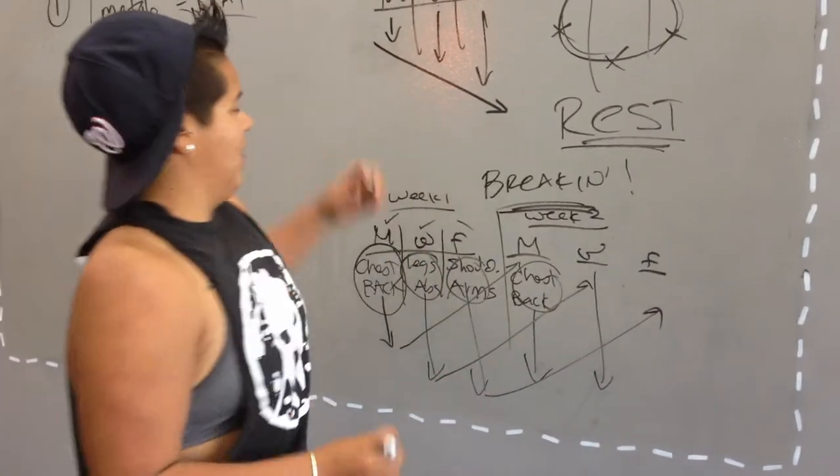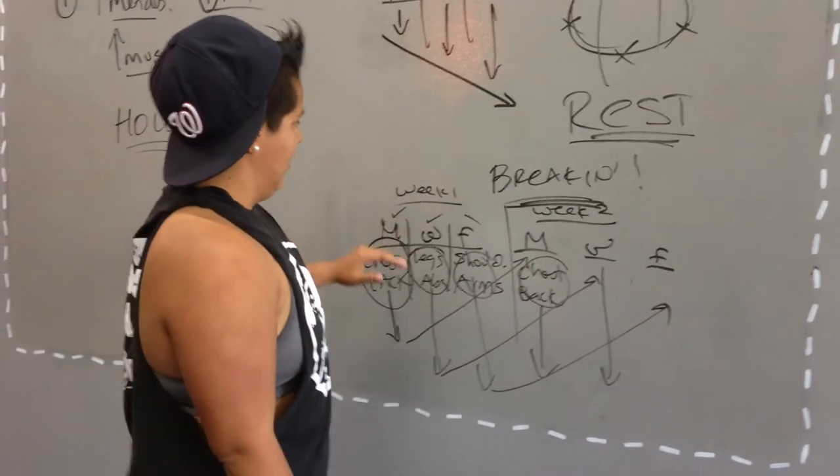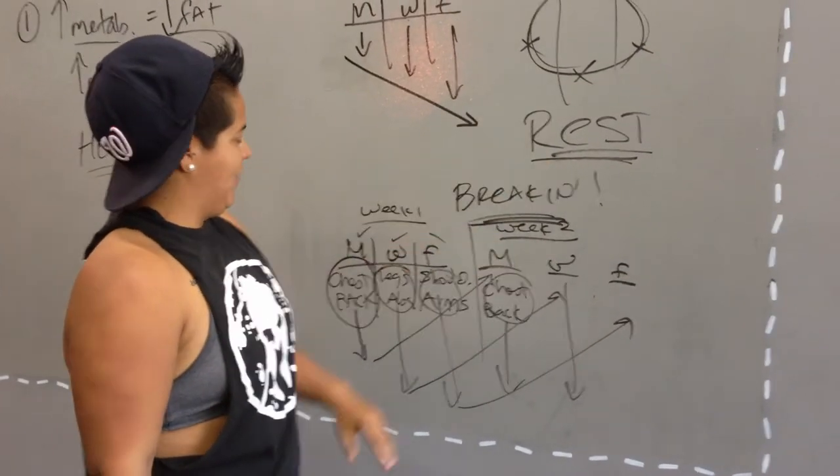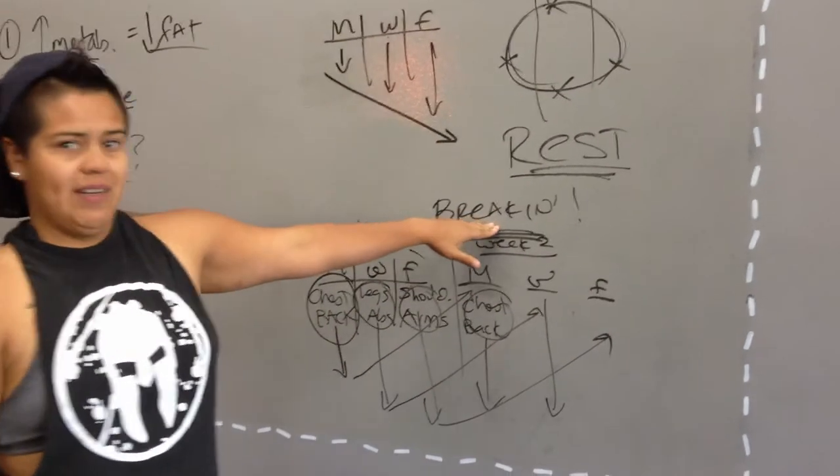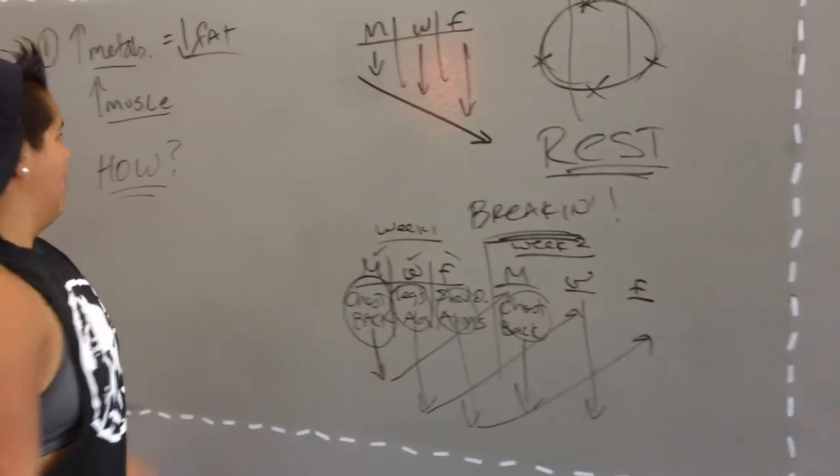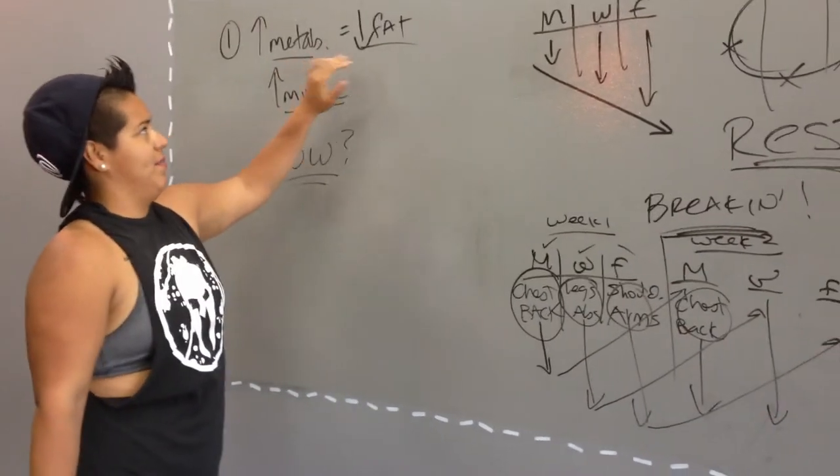So again, common mistake number one, how you fix it. Give your body enough rest in between your workouts by splitting them up. Because when you're lifting, you're breaking. It really happens when you rest. You need to build that muscle, metabolism, and burn that body fat.